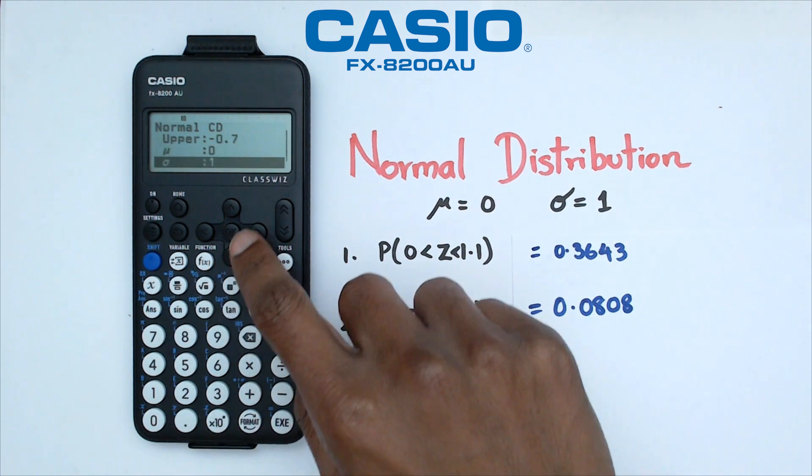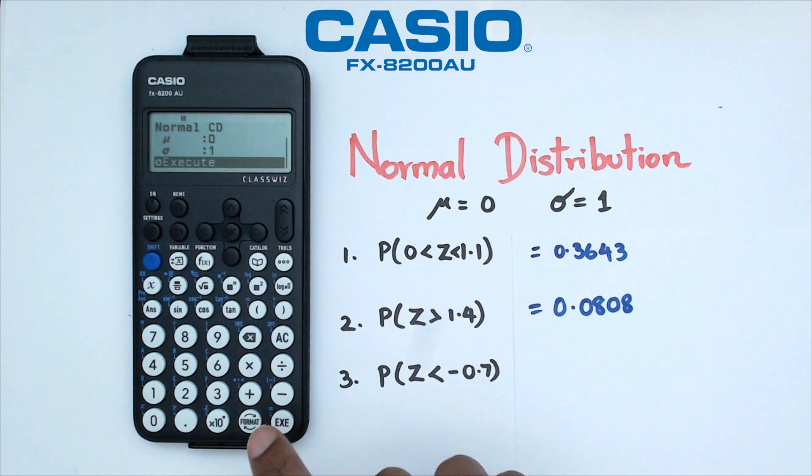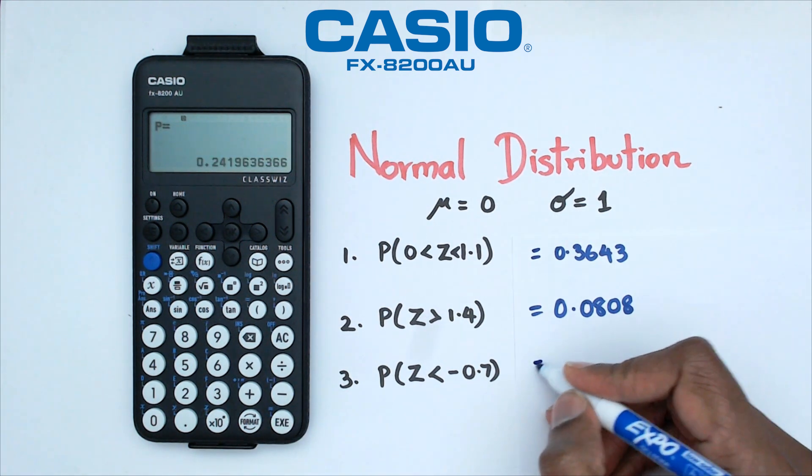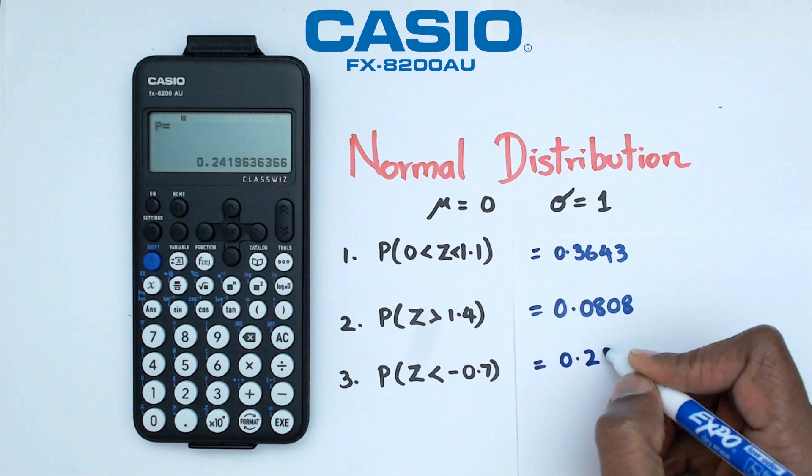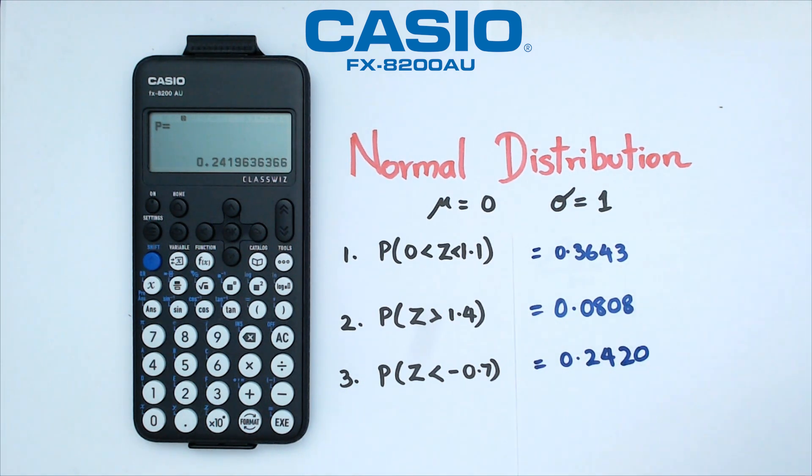And our mean is zero, standard deviation is one. And we're going to click on execute. And so for this, we have a probability of 0.24192. So I'm just going to go 0.2420.